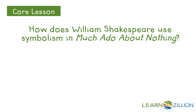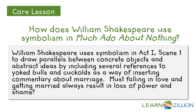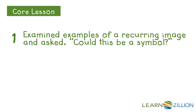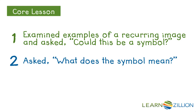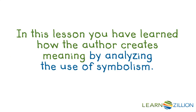How does William Shakespeare use symbolism in Much Ado About Nothing? William Shakespeare uses symbolism in Act 1, Scene 1 to draw parallels between concrete objects and abstract ideas, by including several references to yoked bulls and cuckolds as a way of inserting commentary about marriage. Must falling in love and getting married always result in loss of power and shame? We examined examples of a recurring image and asked, could this be a symbol? Then we asked, what does the symbol mean? Finally, we asked, what ideas does the author communicate by way of the symbol? In this lesson you have learned how the author creates meaning by analyzing the use of symbolism.